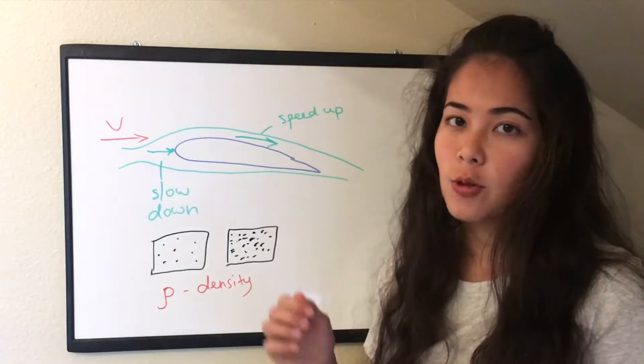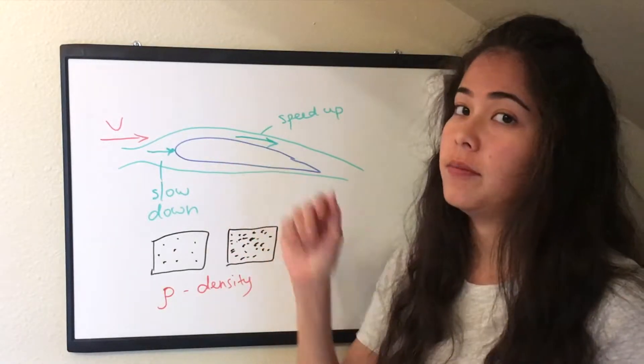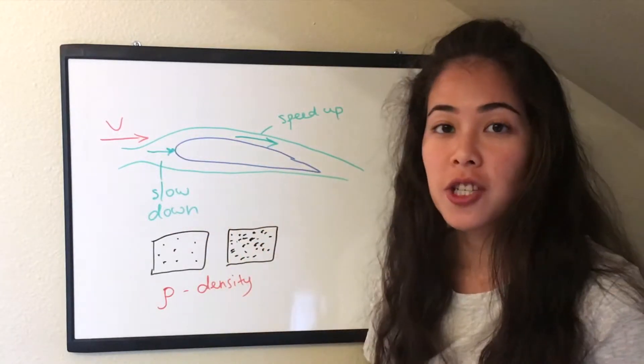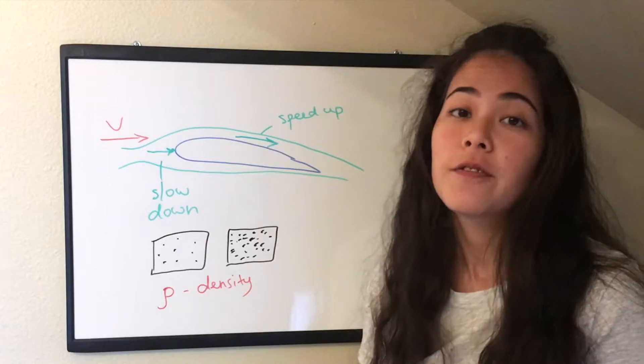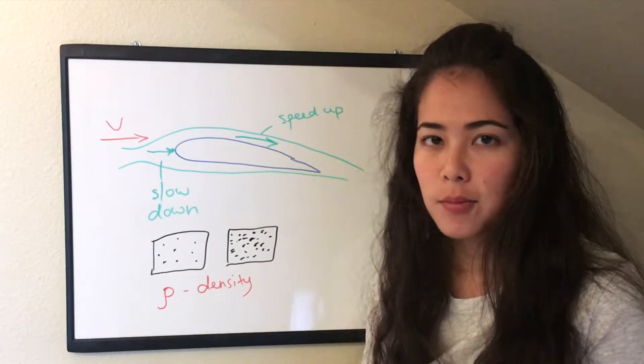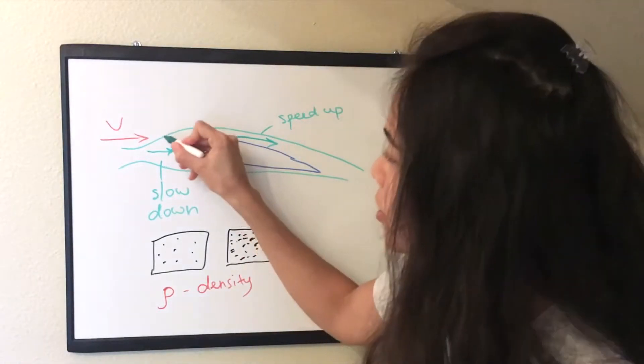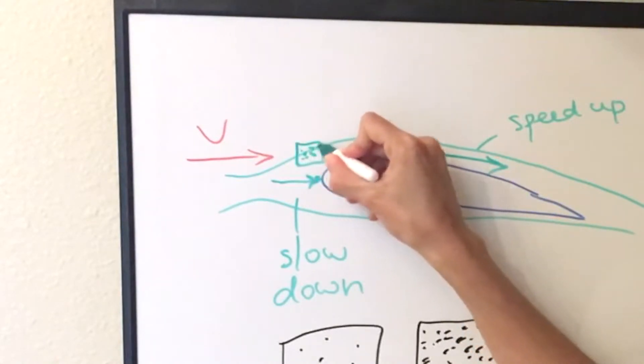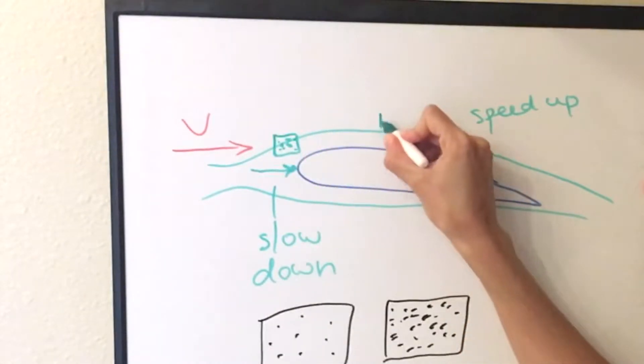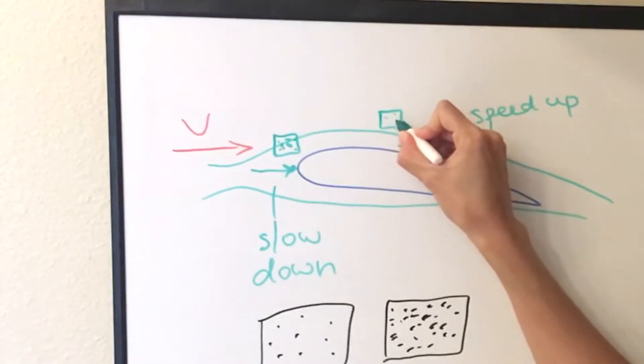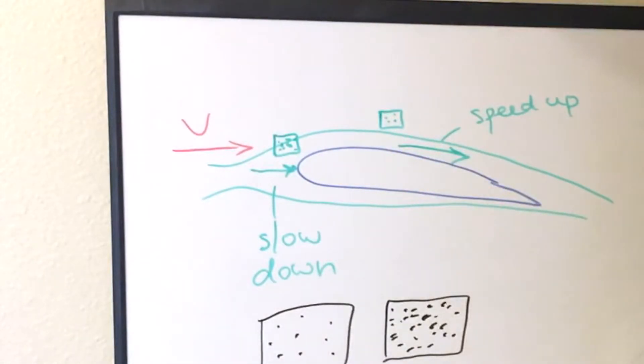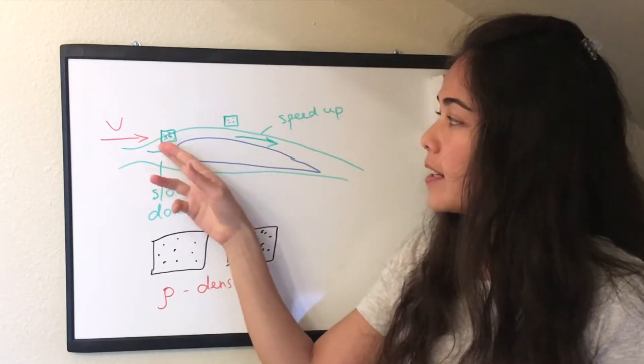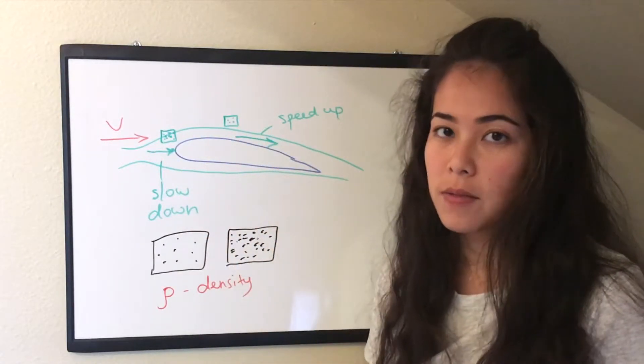So if we go back to our example with an airfoil. When the air is flowing around the airfoil and changes its density, this flow will be called compressible. So for example here we will have dense air. And at this point we will have not dense air. Since it's the same air and it changed its density, then this flow will be called compressible.